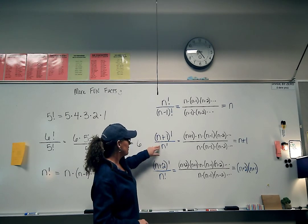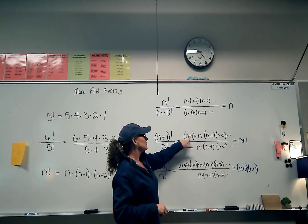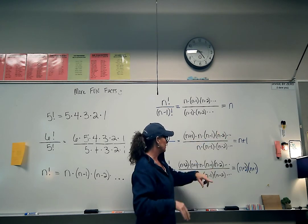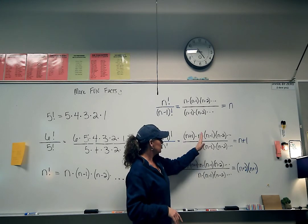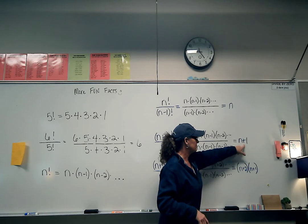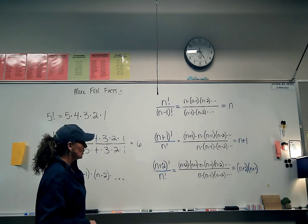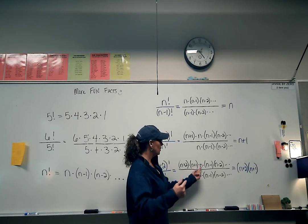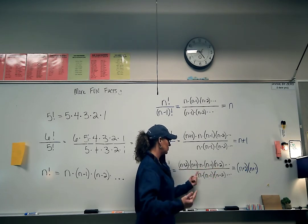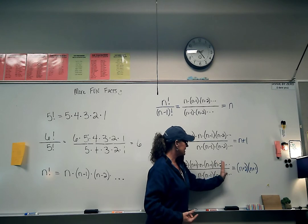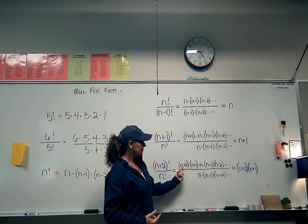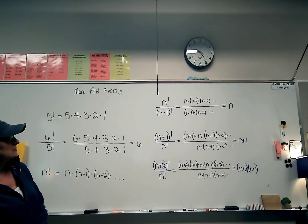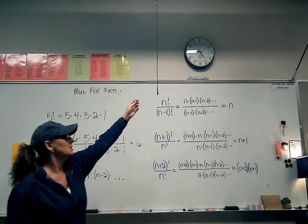What if you have n plus one factorial over n factorial? So n plus one is where you start, then plain n, then n minus one, and so on. The denominator starts at n, so everything from n down cancels and you're left with n plus one. And for n plus two factorial over n factorial: start with n plus two, then n plus one, then n — everything from n down cancels and you're left with n plus two times n plus one. This is going to be useful when we do the ratio test, which is actually my favorite.